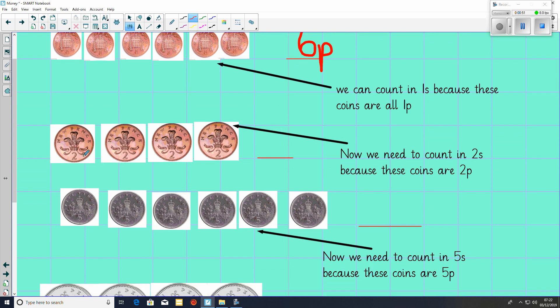For the second question, you've got 4 2p's, so you're counting in 2's. 2, 4, 6, 8. 8 pence.